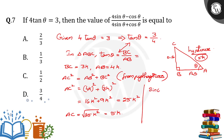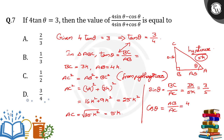Now we find sin θ and cos θ. sin θ = opposite/hypotenuse = BC/AC = 3k/5k = 3/5. cos θ = adjacent/hypotenuse = AB/AC = 4k/5k = 4/5. So sin θ = 3/5 and cos θ = 4/5.